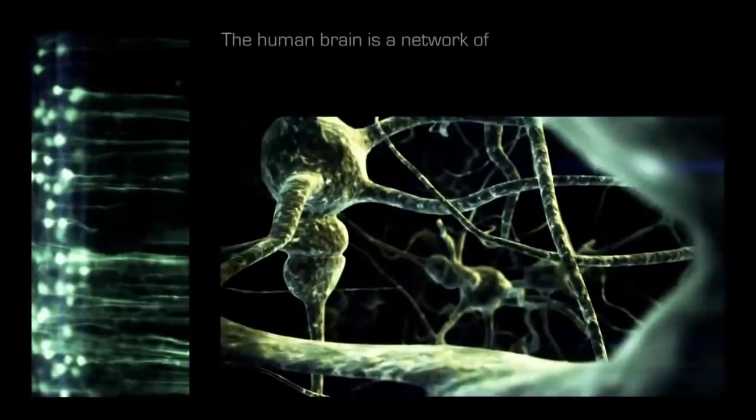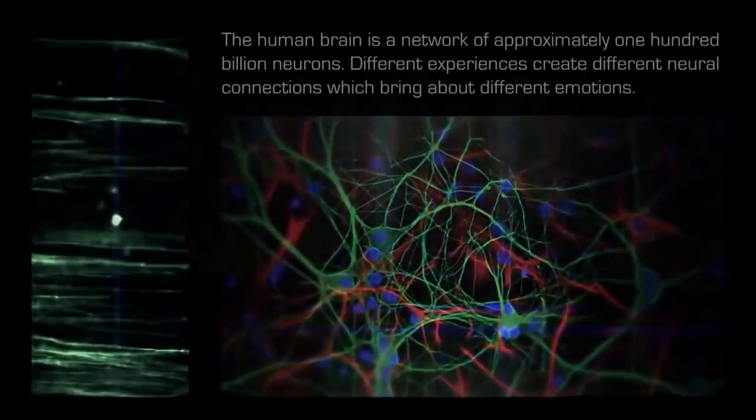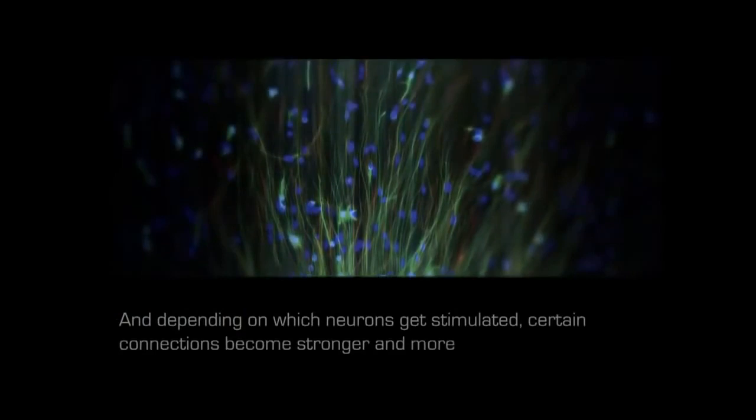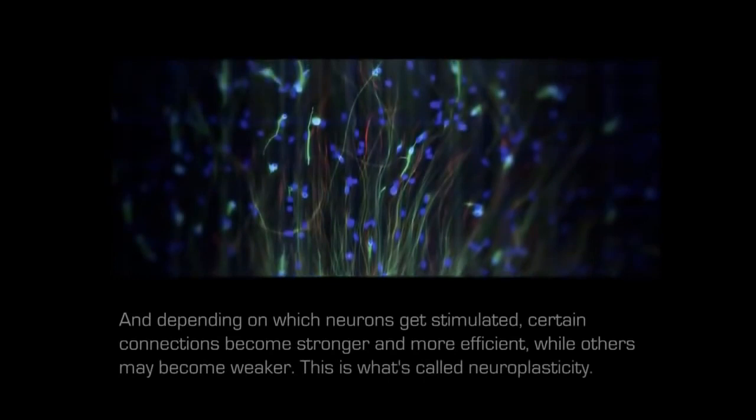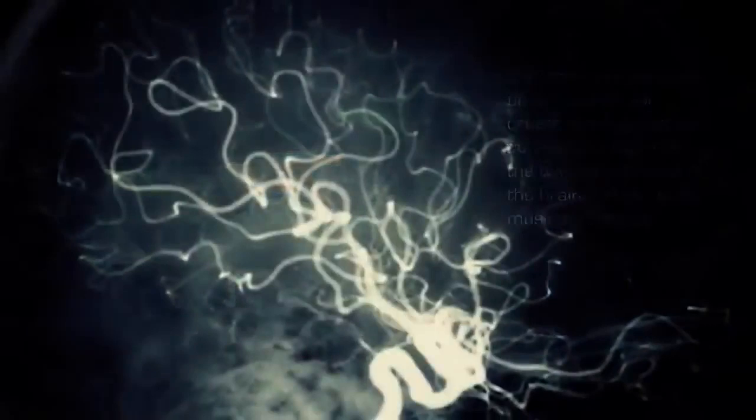The human brain is a network of approximately 100 billion neurons. Different experiences create different neural connections which bring about different emotions. Depending on which neurons get stimulated, certain connections become stronger and more efficient, while others may become weaker. This is what's called neuroplasticity. Someone who trains to be a musician will create stronger neural connections that link the two hemispheres of the brain, in order to be musically creative.